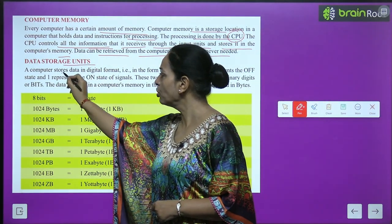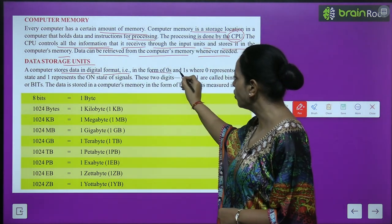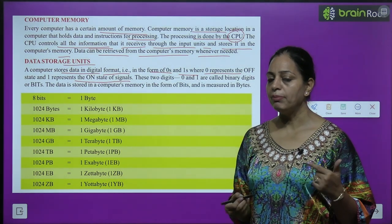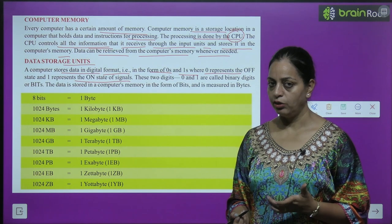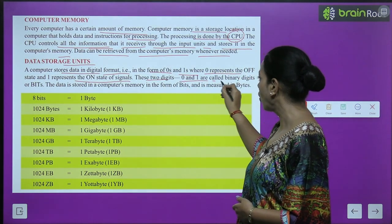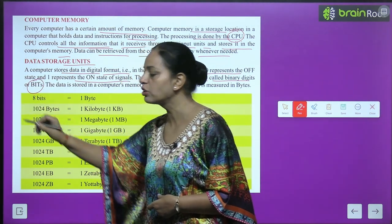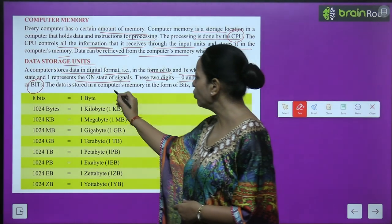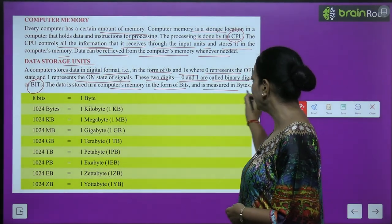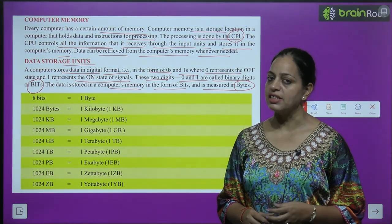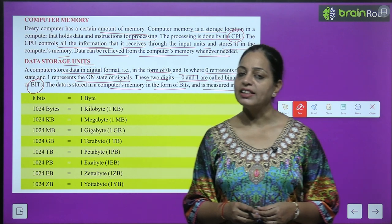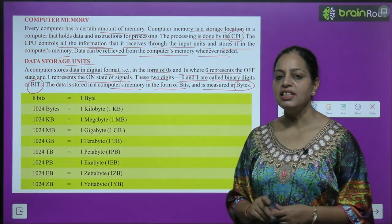A computer stores data in digital format — that is, in the form of zeros and ones. Zero represents the off state and one represents the on state of signals. These two digits, zero and one, are called binary digits or bits. The data stored in computer memory in the form of bits is measured in bytes — just like we measure distance in meters or weight in kilograms.